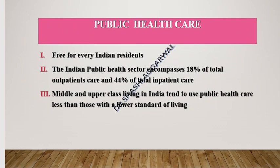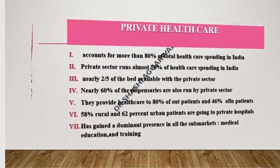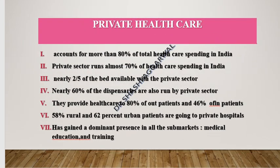In public healthcare, government hospitals charge almost nominal rates. The Indian public health sector accounts for 18% of total outpatient visits and 44% of total inpatient care. Most people utilizing public health facilities are urban poor. The middle and upper class depend largely on private healthcare. Private healthcare is quite dominant — accounting for more than 80% of total healthcare spending in India, approximately 70% of healthcare services, two-fifths of beds, and 60% of dispensaries are run by the private sector. Private hospitals handle 80% of outpatients and 46% of inpatients; 58% of rural and 62% of urban patients go to private hospitals.